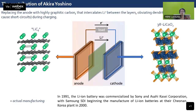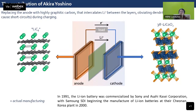Akira Yoshino's contribution was immense — he was the first person to show that instead of lithium metal anode (which caused short circuits and unstable cycles), graphite can be used as the anode. Lithium ions can be intercalated between the graphene layers. Replacing the anode with highly graphitic carbon that intercalates lithium between layers obviates dendrite growth and the short-circuiting potential. By the contributions of all three scientists, in 1991 the lithium-ion battery was commercialized by Sony and Asahi Kasei Corporation, with Samsung SDI beginning manufacture in the year 2000 — starting the entire world of portable electronics.